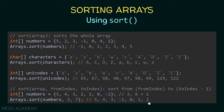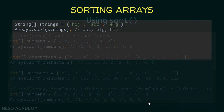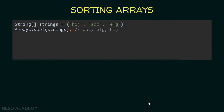Now we've been using primitive types. What if we want to sort an array of objects? In this case I have an array of strings called 'strings' containing three strings. I'm using the sort method to sort this array, and we are able to sort an array of strings using the sort method.